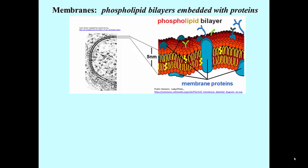Here we have a classic cartoon of membranes. If you look closely, you can see that in an electron microscope picture of a membrane, we see what's called a trilamellar structure, which simply means three layers: a dark layer, a light layer, and another dark layer.